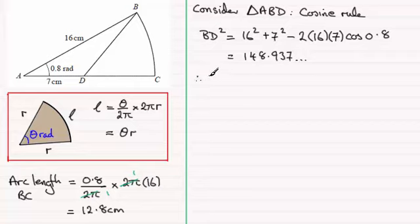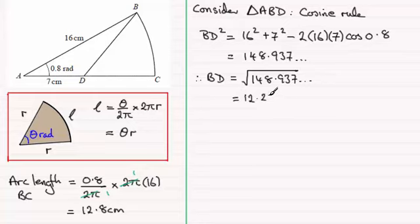So to get BD, we obviously need to take the square root of both sides of the equation. So BD equals the square root of 148.937 and so on, and what you get is 12.204 and so on centimeters.